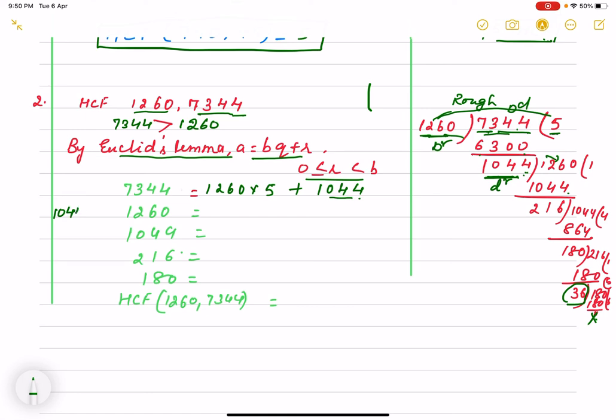Now, 1044 again not equal to 0. So, I am writing in next step. It is not equal to 0, comma. So, now second step. This is second step. 1260 is equals to 1044 divisor into quotient plus remainder. Written. Again remainder is not equal to 0.